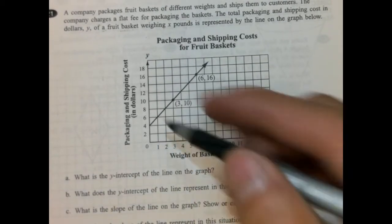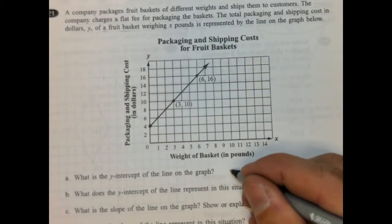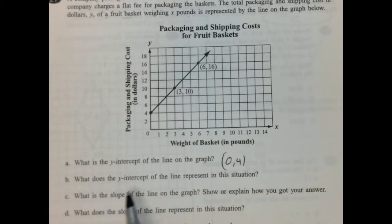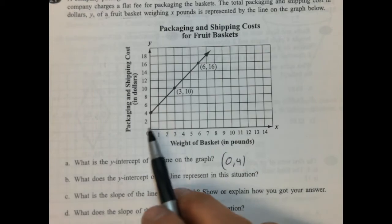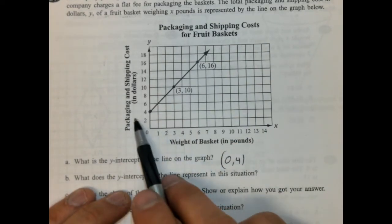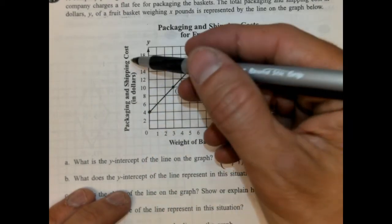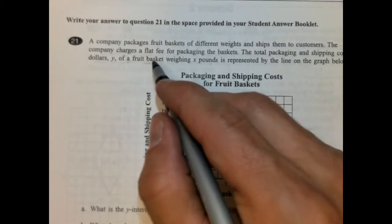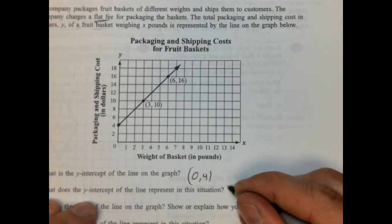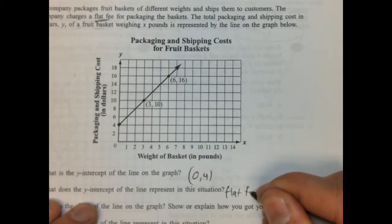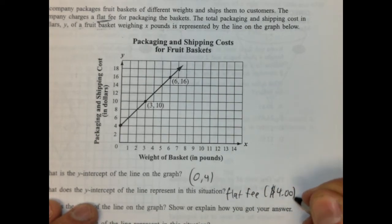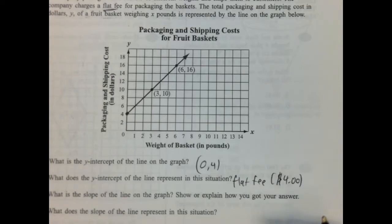What is the Y-intercept of the line on the graph? It's the Y-intercept. Where does it cross the Y-axis? Right here. So we'd say 0, 4. What does the Y-intercept of the line represent? Well, Y-intercept is our starting value. So our starting value at 0, 8, it still costs us $4. Why? Because that would be that flat fee that was mentioned earlier. So this represents the flat fee, which is $4. Okay? So that's what you're starting with.